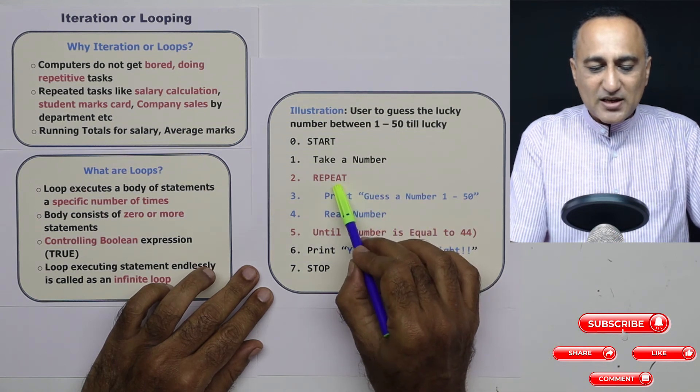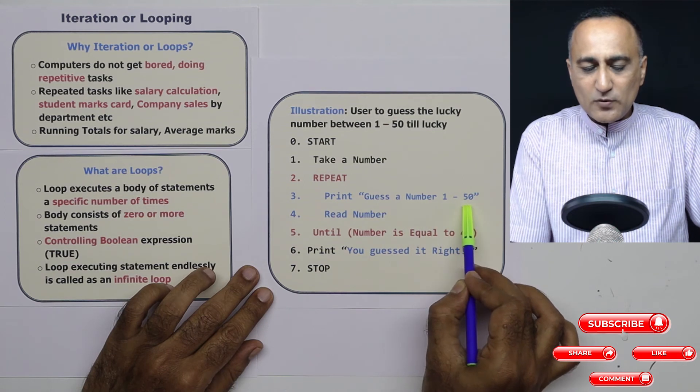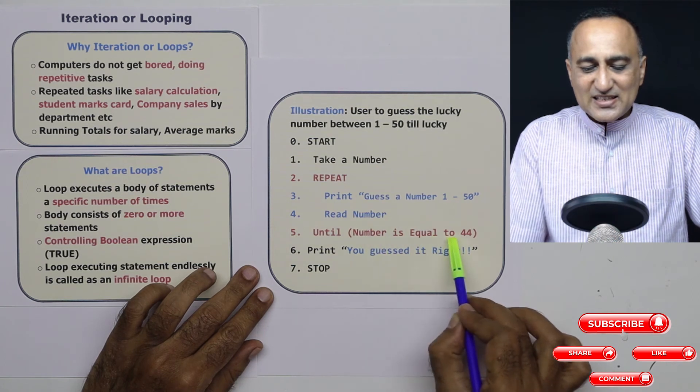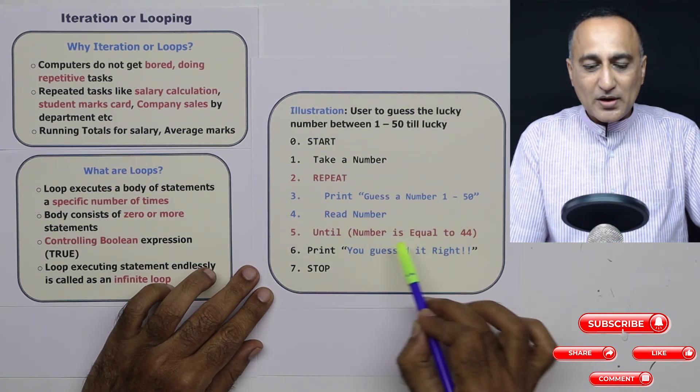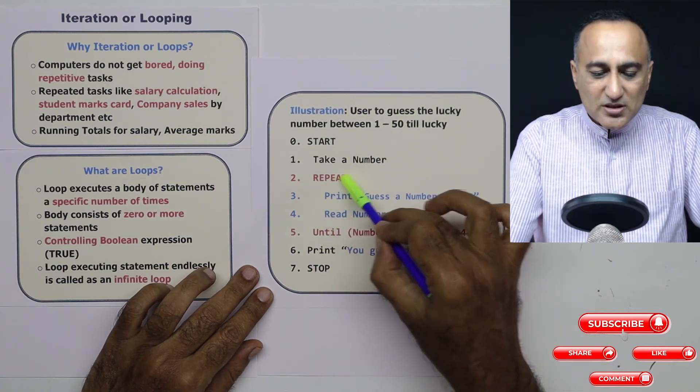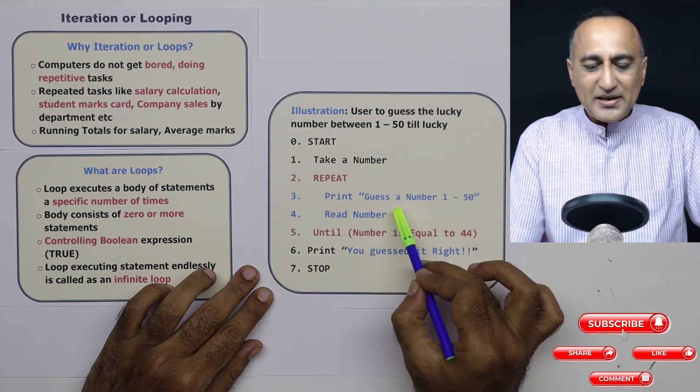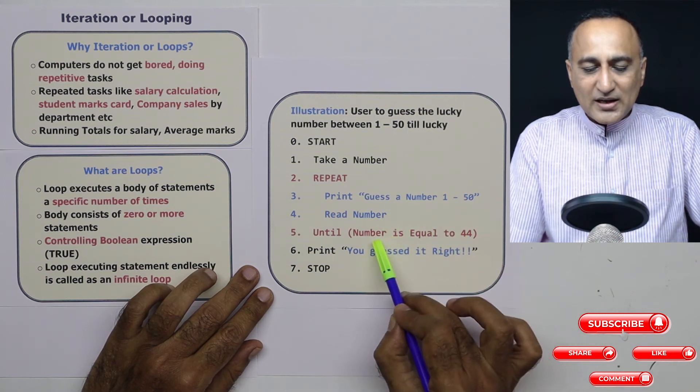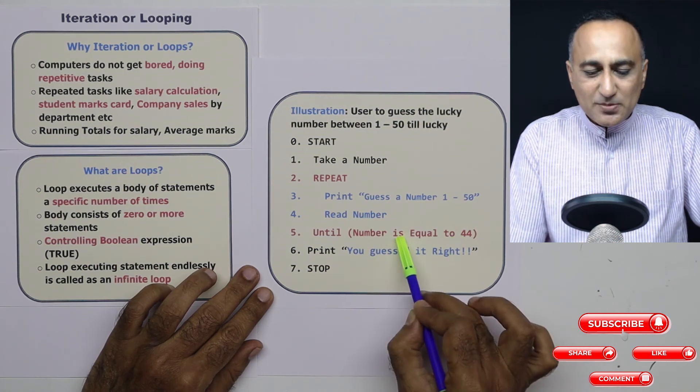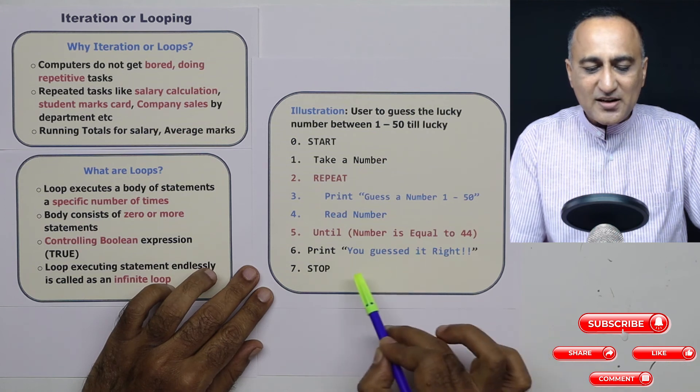I'm saying repeat, I'm asking the user guess a number between one to 50. The user enters a number, let's say enters 10. Since 10 is not equal to 44, it will again ask him enter the number. This way, the user keeps on entering the number. At some point, he enters the number 44. Now, since number is equal to 44, this condition becomes true. Once it becomes true, I come out here and I print the message, you guessed it right and stop.